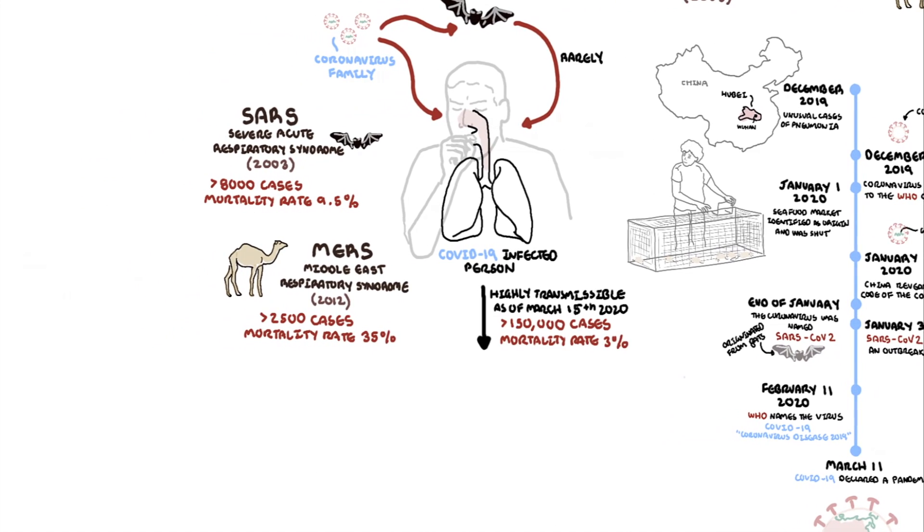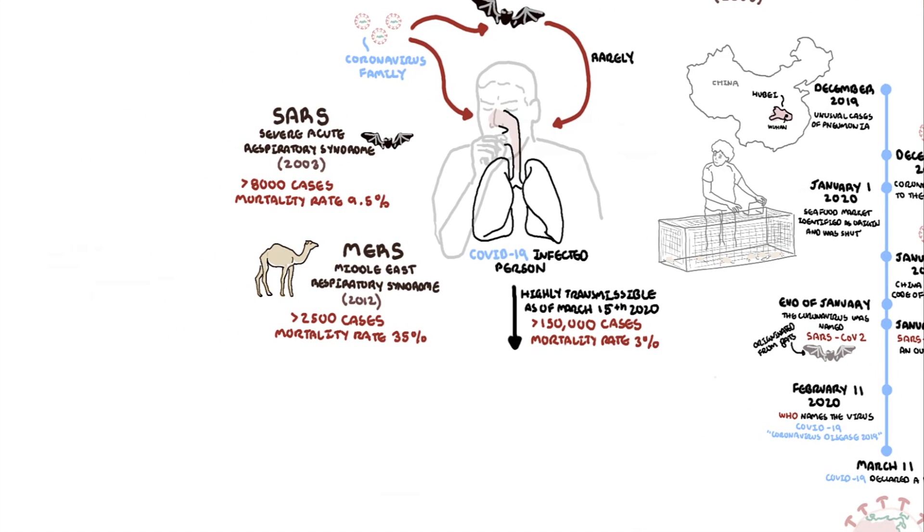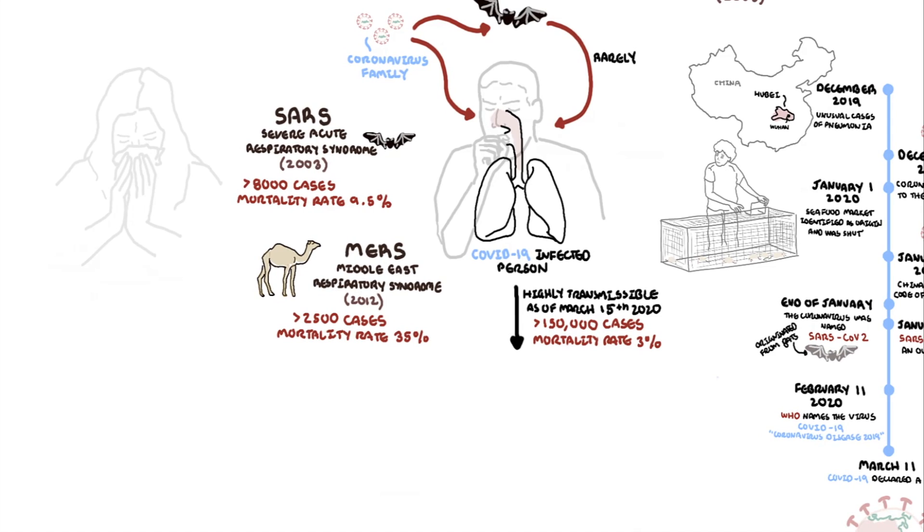Despite having a lower mortality rate than its predecessors, 3% is still very significant, especially with the rapidly growing number of cases. You can imagine for every 100 cases, 3 people may die. If we compare these statistics of coronavirus to the seasonal flu caused by the influenza virus, which affects millions each year, the mortality rate of the influenza seasonal flu is less than 0.2%.